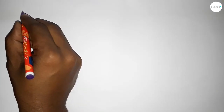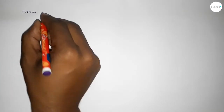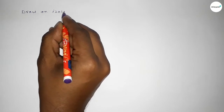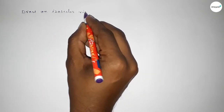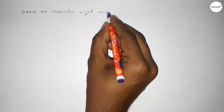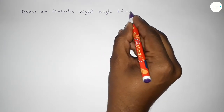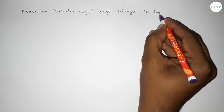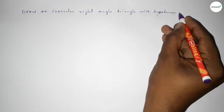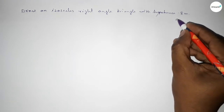Hi everyone, welcome to SI Share Classes. Today in this video we have to draw an isosceles right angle triangle with given only hypotenuse 8 centimeter. So let's start constructing an isosceles right angle triangle.